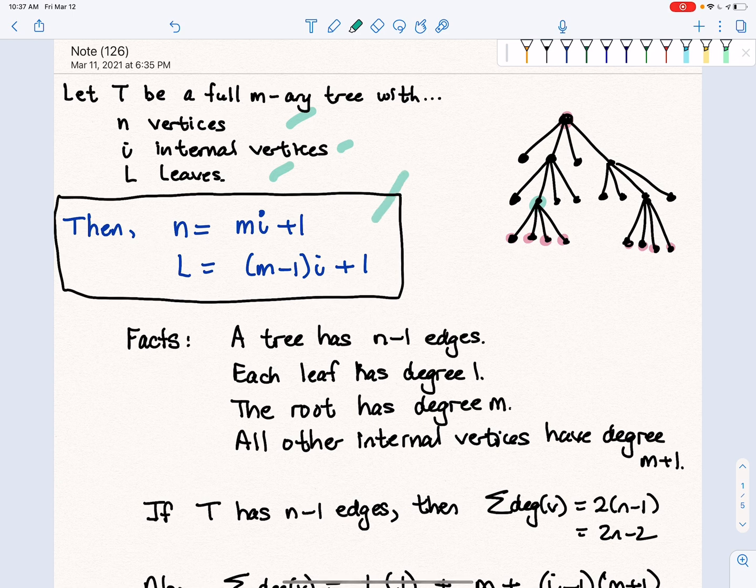This right here is the theorem that basically says N is equal to MI plus 1, in other words, M times the number of internals plus 1, and the number of leaves is 1 less than M times the number of internals plus 1.